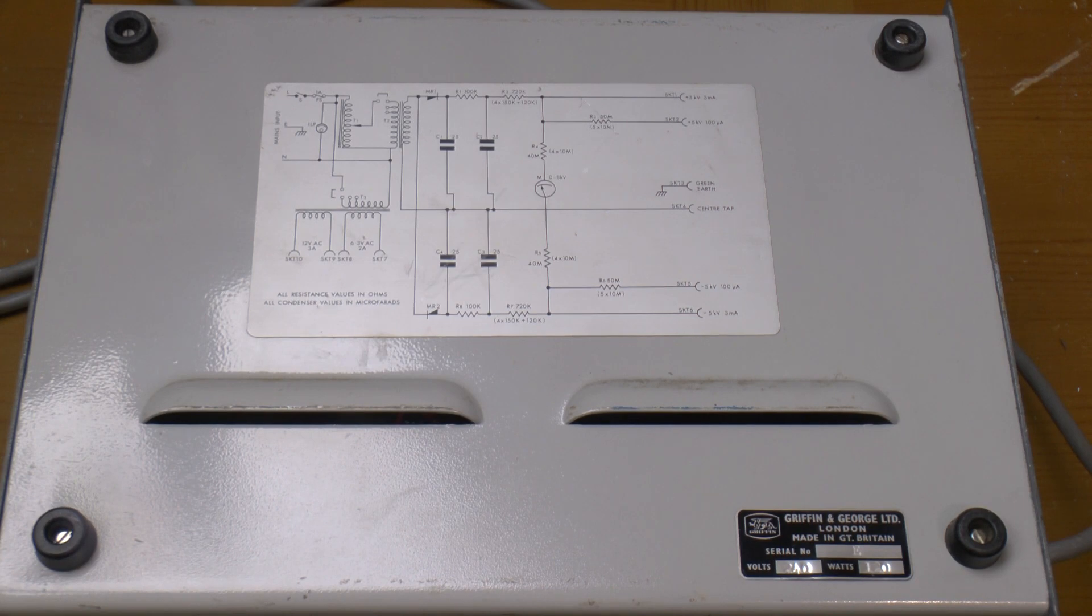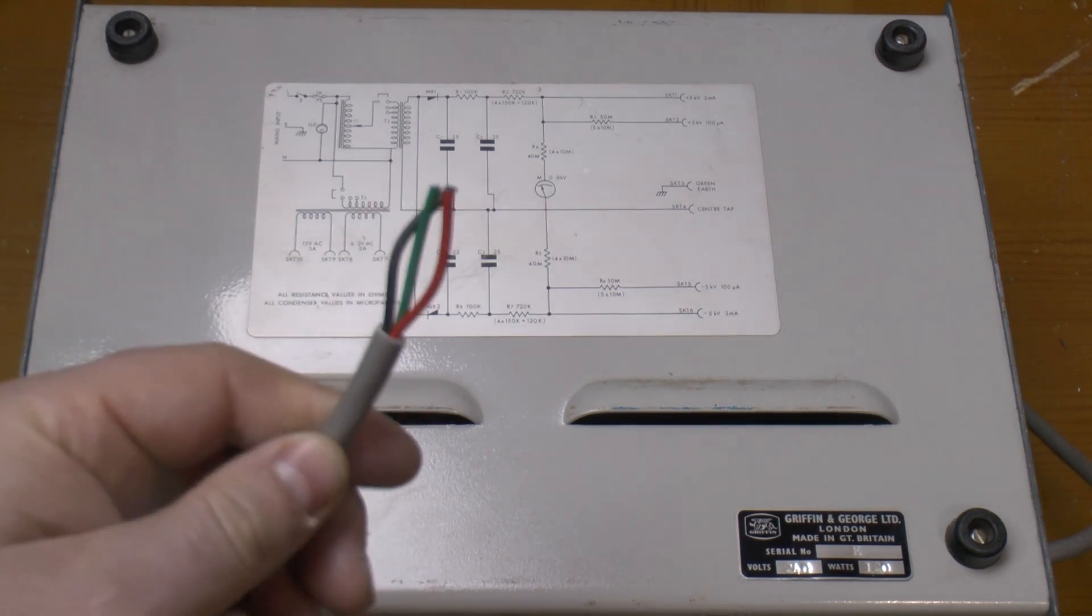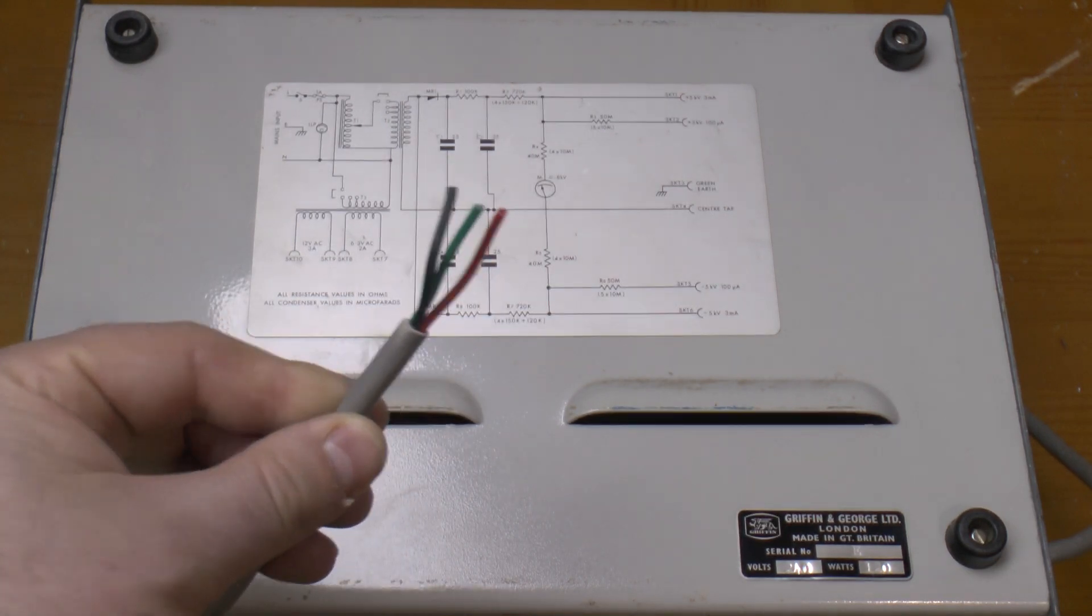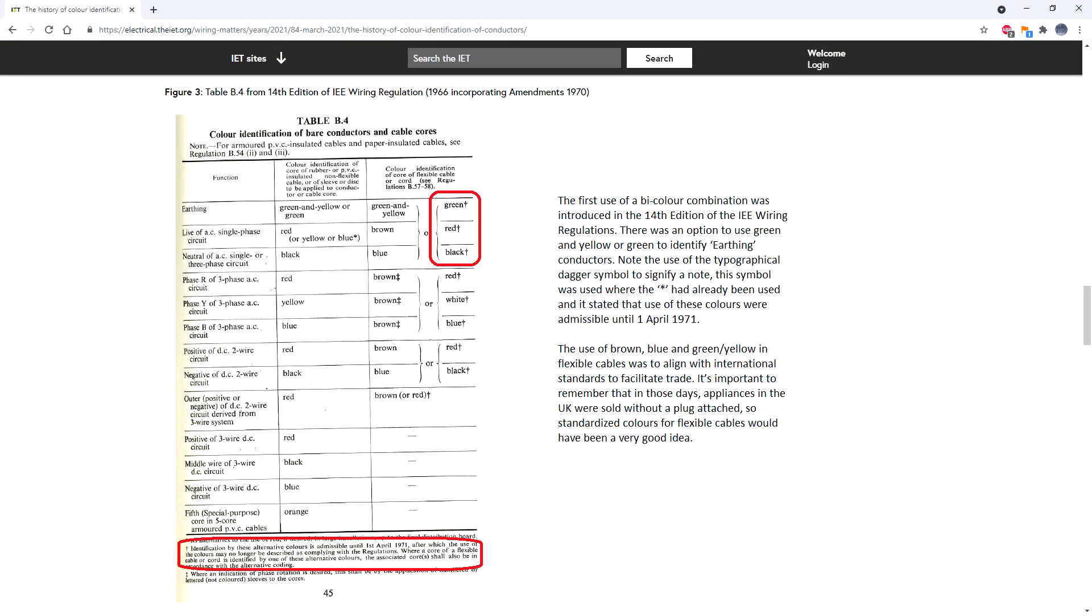Let's take a look inside and see if we can figure out how old it is. Before I do though, there's a clue as to the youngest it could be. Look at the cable. That cable color code was only permitted until the 1st of April 1971, so that's the newest this unit can be. It's at least 50 years old.